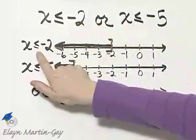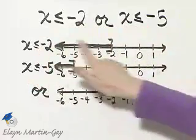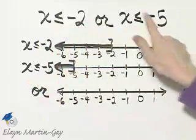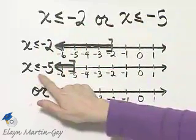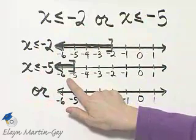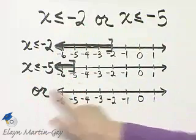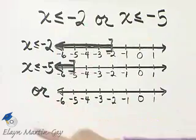Notice I've graphed the first inequality on my first number line. I've graphed the second inequality on the second number line, x less than or equal to negative 5. There's the graph. And now let's take the union of these two graphs.